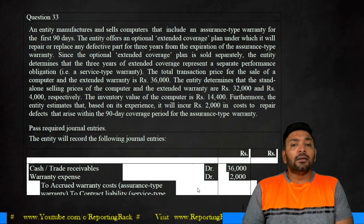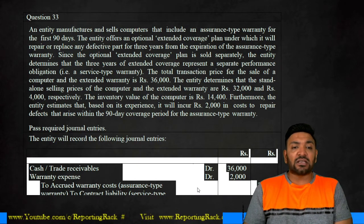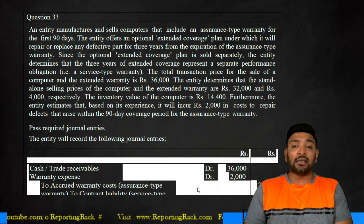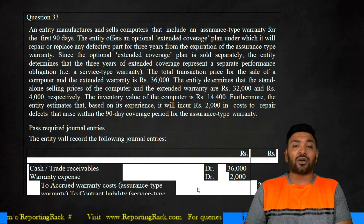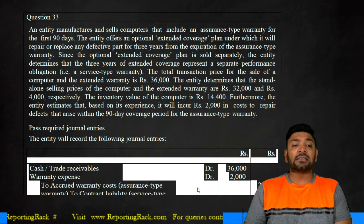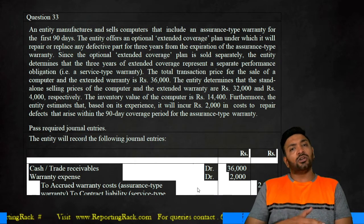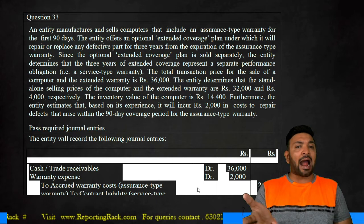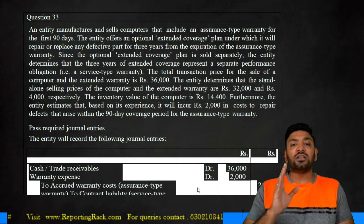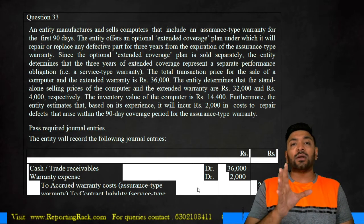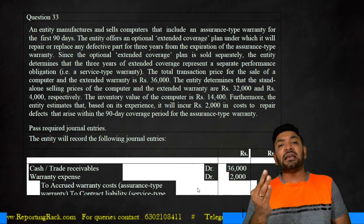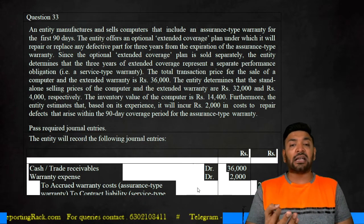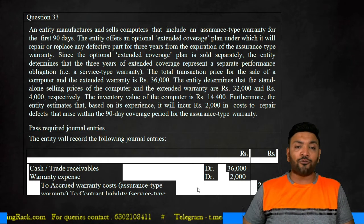The total transaction price for the sale of computer and extended warranty together is 36,000. The entity determines that the standalone selling price of the computer is 32,000 and the warranty is 4,000 — adding up to exactly 36,000. So the computer along with the 90-day warranty is sold for 32,000, and the three-year extended coverage plan is sold for 4,000.